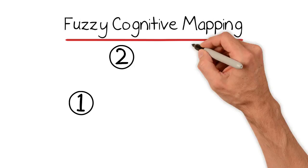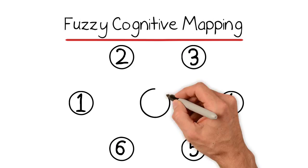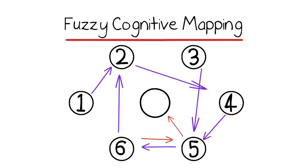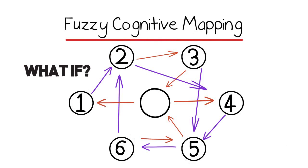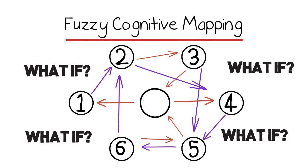Fuzzy cognitive mapping is a form of concept mapping where users can develop qualitative static models that the software translates into semi-quantitative dynamic models that are useful for running what-if scenarios.